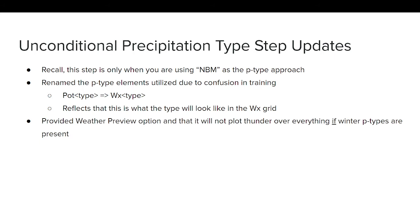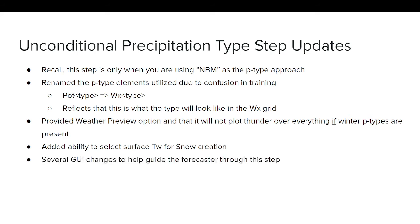We've also provided a weather preview option that will not plot thunder over everything if winter p-types are present, so you can clearly see how the various precipitation types align when they're all on top of each other as they would appear in the weather grid. Additionally, there is the ability to select the surface wet bulb for snow creation, and overall GUI changes to guide the forecaster through this step, since previously everything was presented in one single GUI which was distracting and not user-friendly.